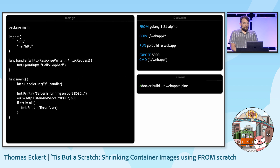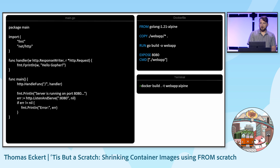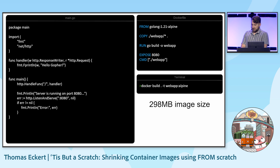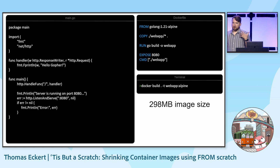I took this Dockerfile and used it to build an image for the code on the left. It's a simple HTTP server that only returns "hello, gopher." When I build it, I get an image that is 298 megabytes in size. It's not abnormal for a Docker image, but it's much larger than it needs to be.